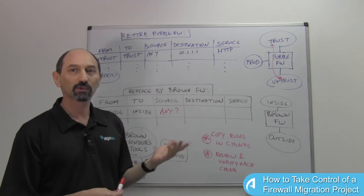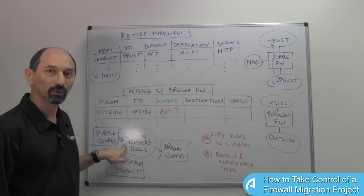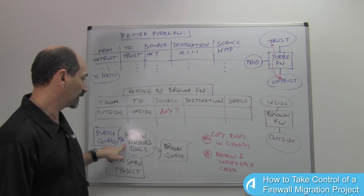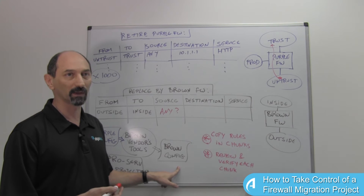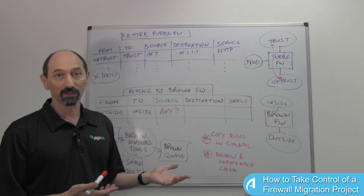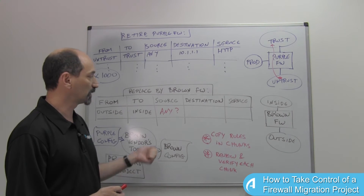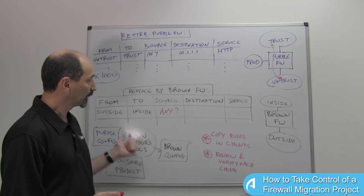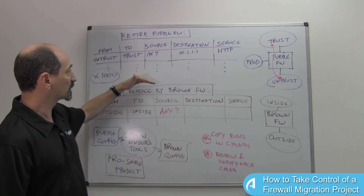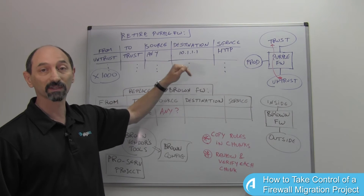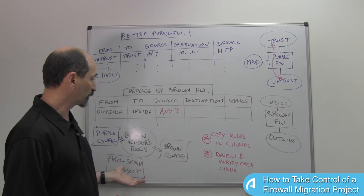Somebody has to make a design choice here. If you use some automatic tool with no intervention, you might end up with a configuration that's either risky — allowing traffic that you don't want to allow — or possibly worse, too narrow and not allowing the traffic that you actually need, so functionality will break. Assuming that you can do this in one go when you have thousands of these, each one potentially requiring thought and design, is a high-risk project.